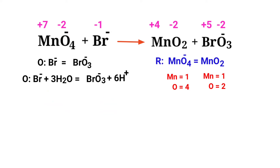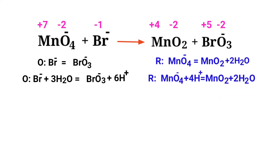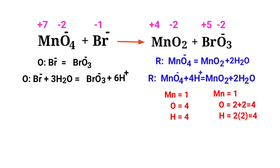Now balance the number of atoms in the reduction half reaction. To balance the oxygen atoms, produce water molecules. The oxygen atoms are now balanced. To balance the hydrogen atoms, produce H⁺ ions. The number of atoms are now balanced in the reduction half reaction.